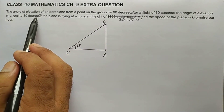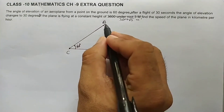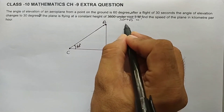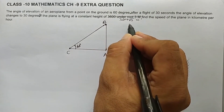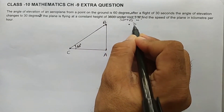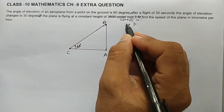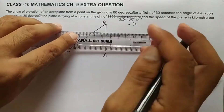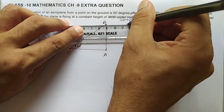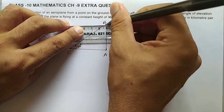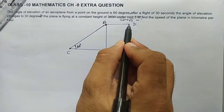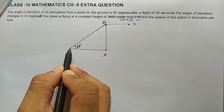The next line says: after a flight of 30 seconds, the angle of elevation changes to 30 degrees. So after 30 seconds, suppose the aeroplane has reached point D. The angle of elevation of point D from point C is now 30 degrees.